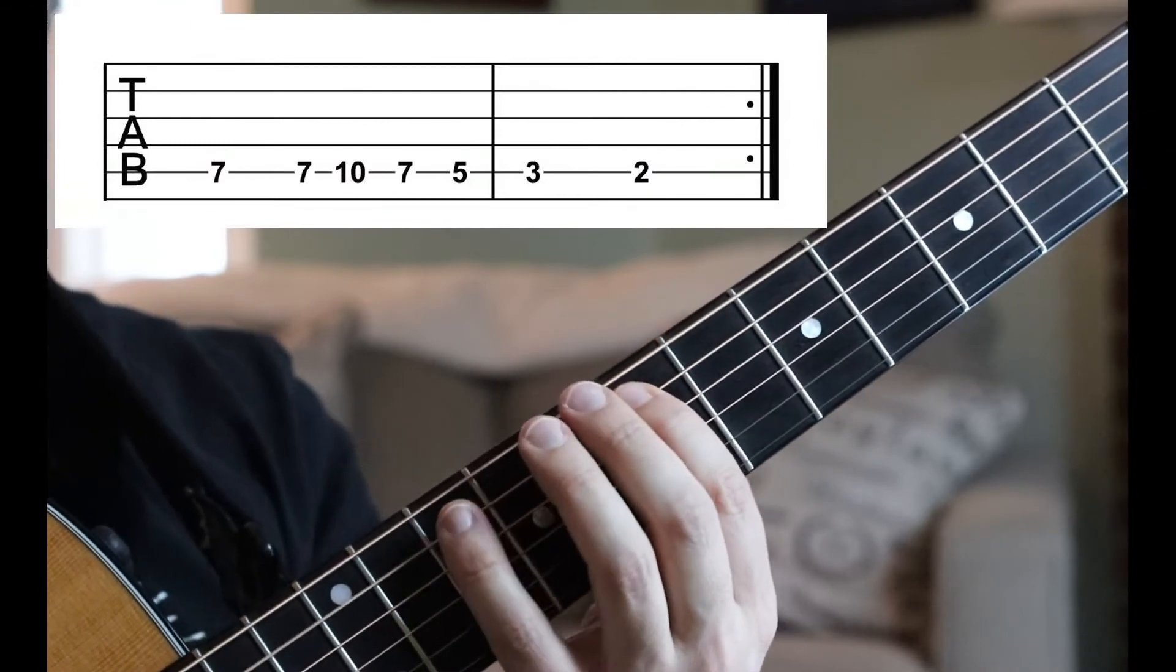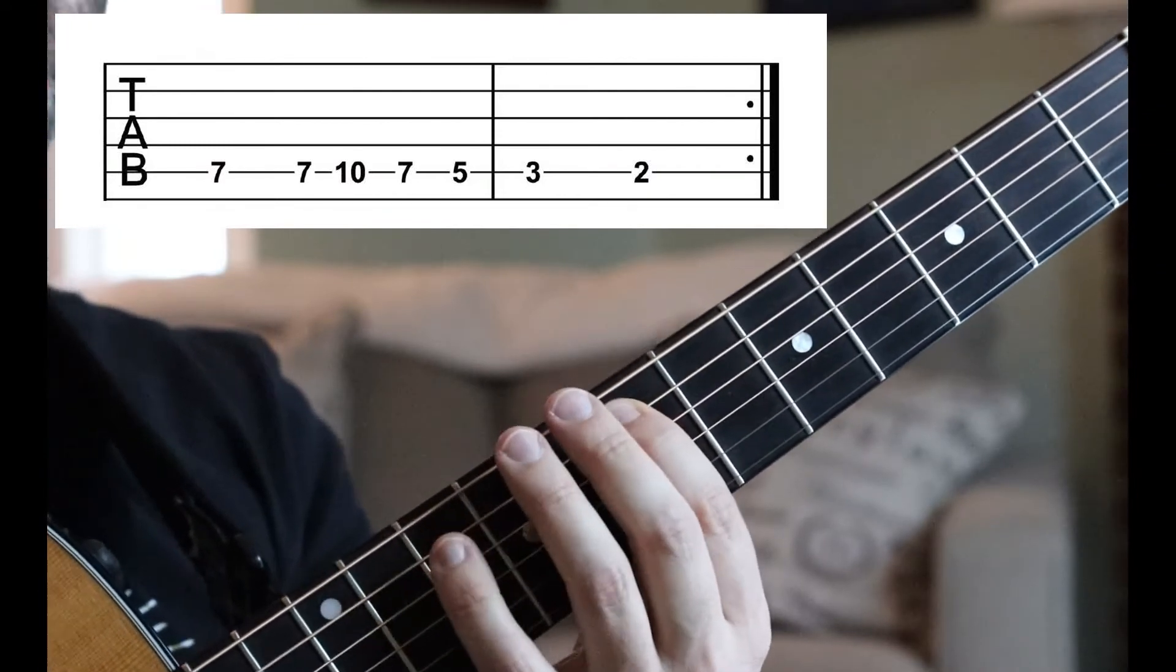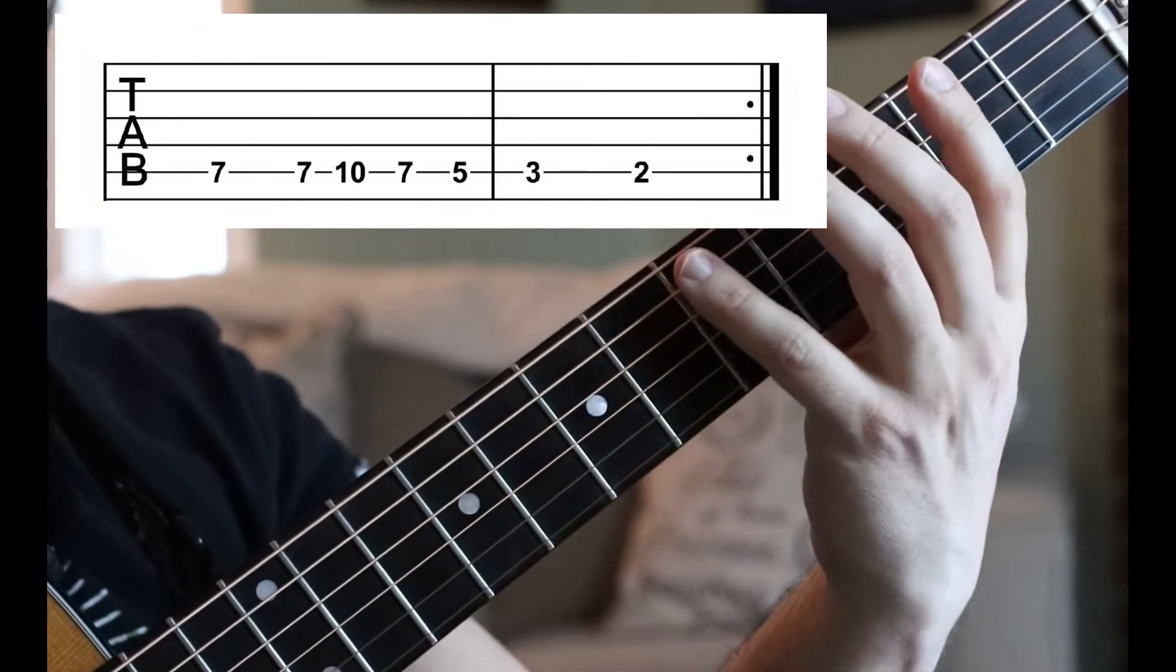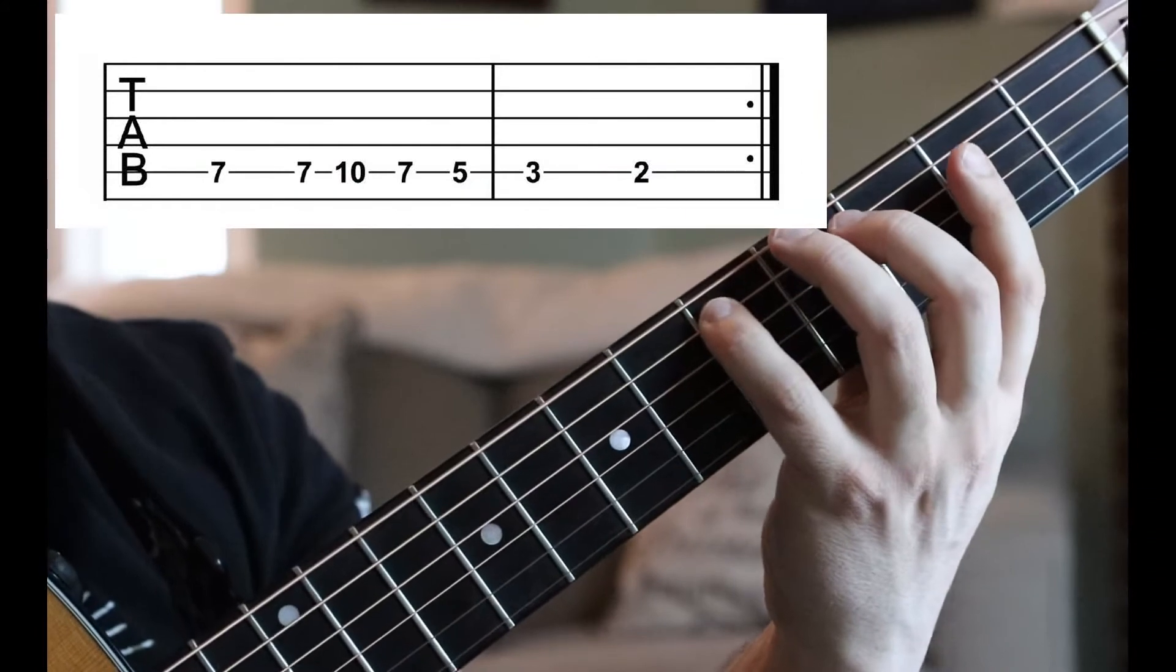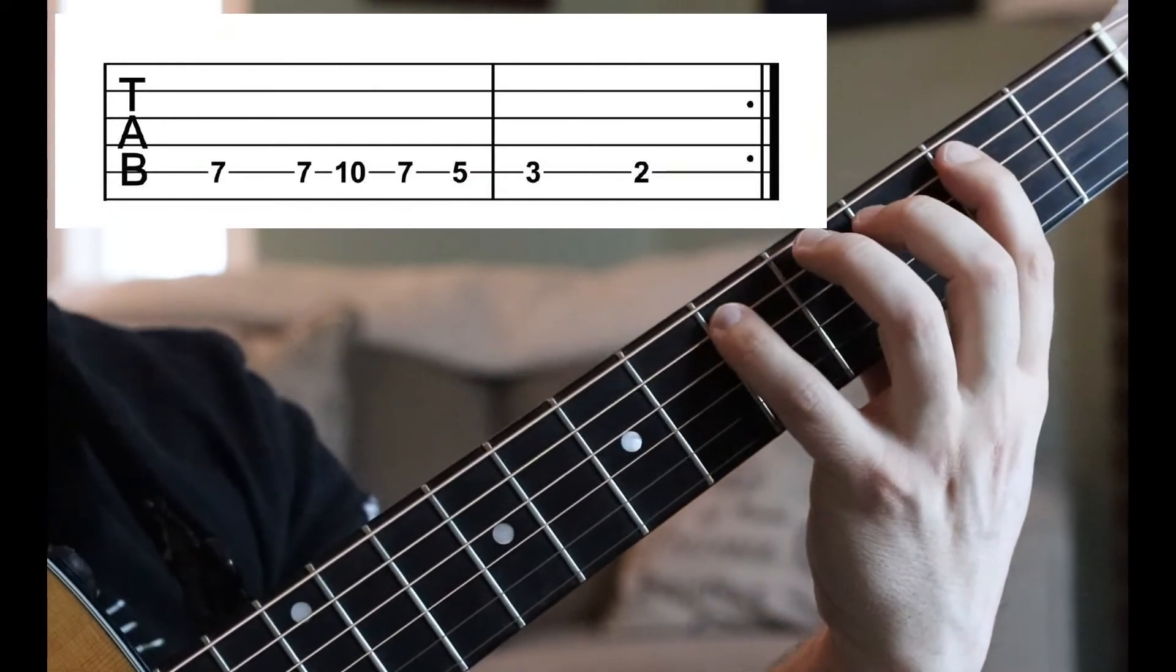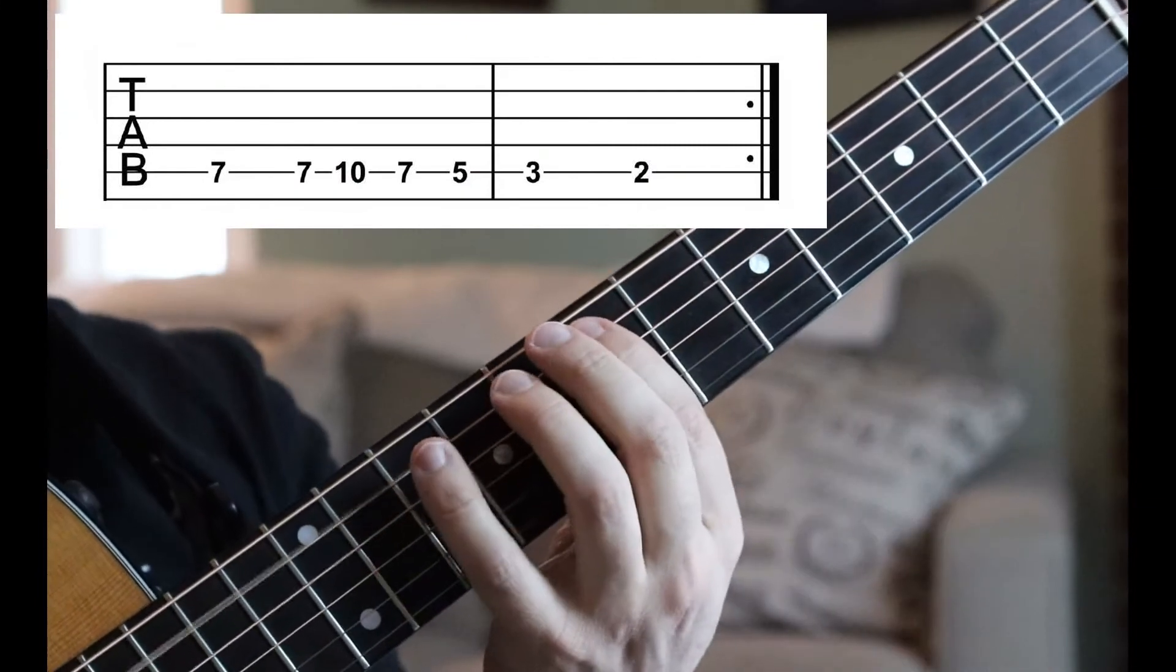So, after we go seven, seven, ten, seven, what we want to do is shift our whole hand down and get our pinky on the fifth fret so that five, three, and two become relatively easy. So, one more time, it's...